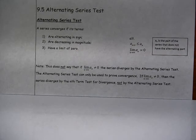So 9.5 is concerned with alternating series. We're going to start with the alternating series test, and then we're also going to talk a little bit about the remainder or the error for an alternating series.